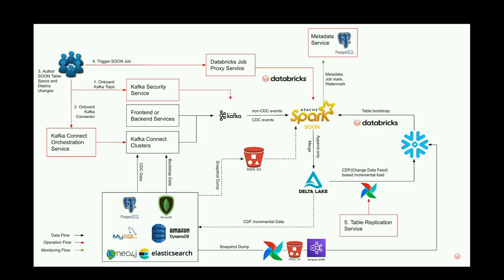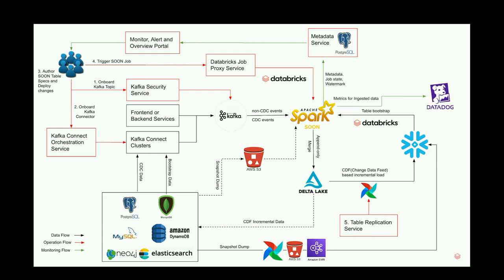For monitoring: as the Swoom pipeline runs, it emits metadata, job state, and watermarks to an external metadata service. This quarter we're building a Swoom-as-a-service user portal so users can do all operations in one place — monitoring, building alerts, and triggering or canceling jobs directly. We also emit metrics to Datadog, and we've scheduled auxiliary pipelines that automatically onboard Swoom tables to run optimize, z-order, and vacuum operations.